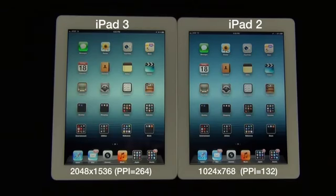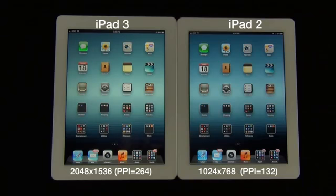Briefly covering the specs here: the iPad 3 has an LCD display with a resolution of 2048 by 1536 with a PPI of 264. The iPad 1 and 2 had a screen resolution of 1024 by 768, or 132 pixels per square inch.